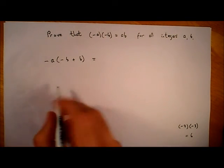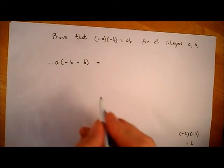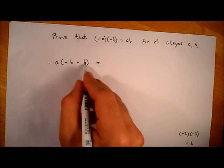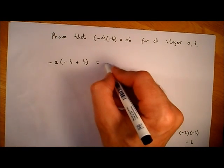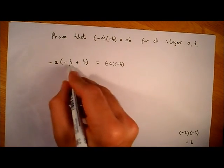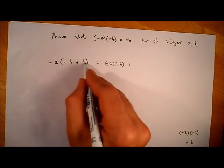I will get minus a by minus b, so I can multiply this by this and this by this by the distributive property. So I get minus a times minus b plus minus a by b.